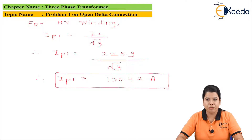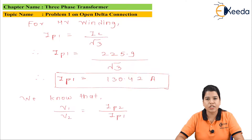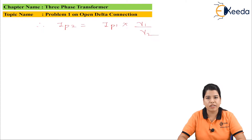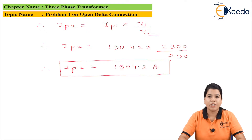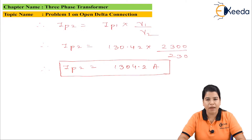Now let us find IP2. The current transformation ratio in terms of voltage ratio is given by V1/V2 = IP2/IP1, so rearranging: IP2 = IP1 × (V1/V2). Substituting the values: IP2 = 130.42 × (2300/230), which gives IP2 = 1304.2 amperes. We have now found both IP1 and IP2.